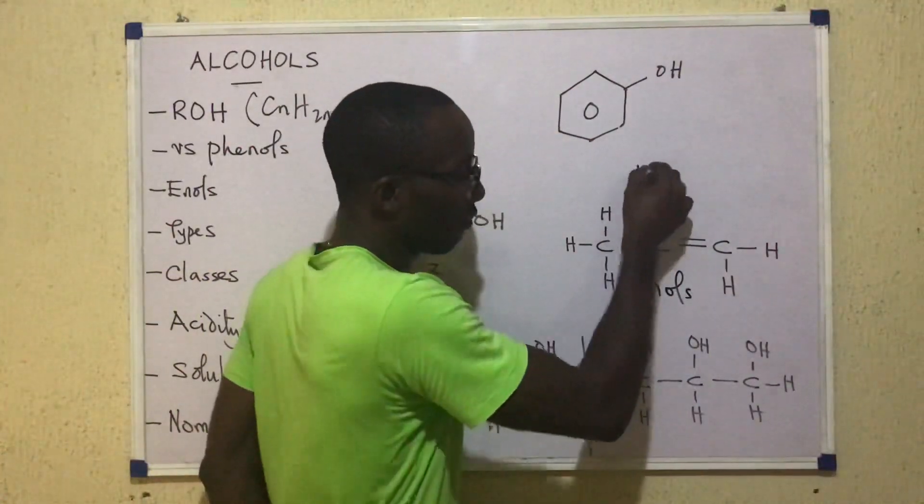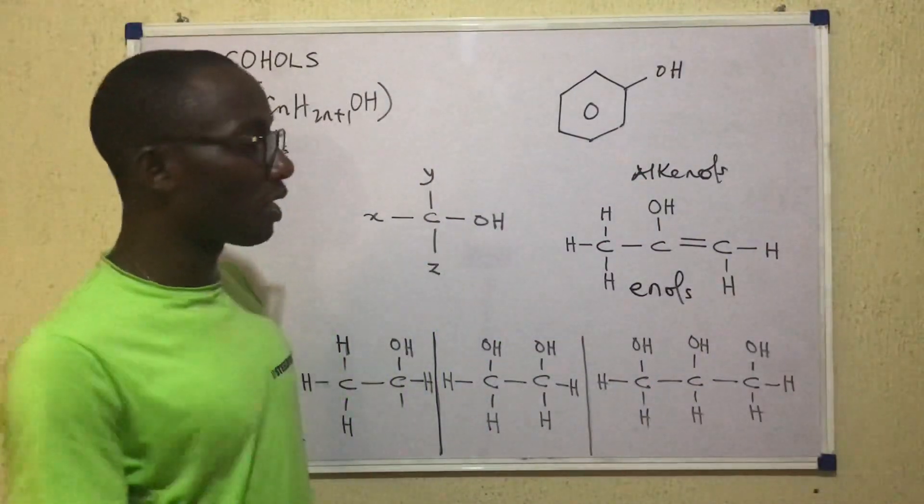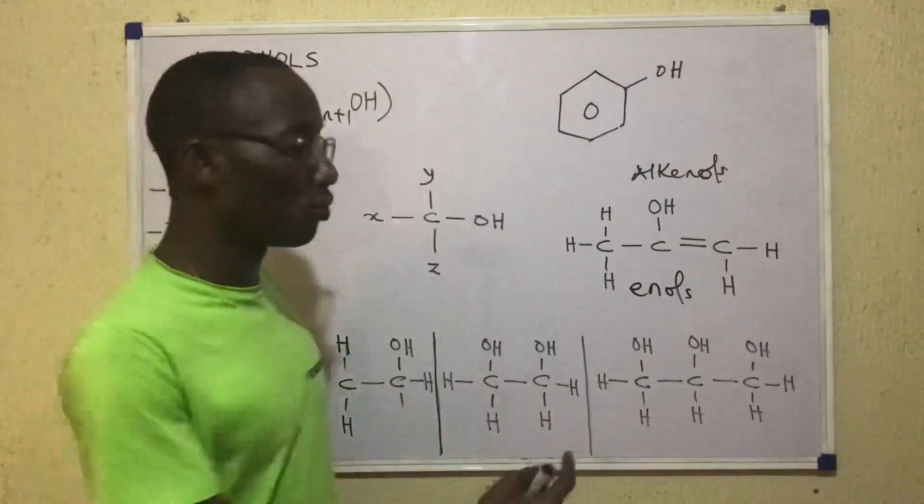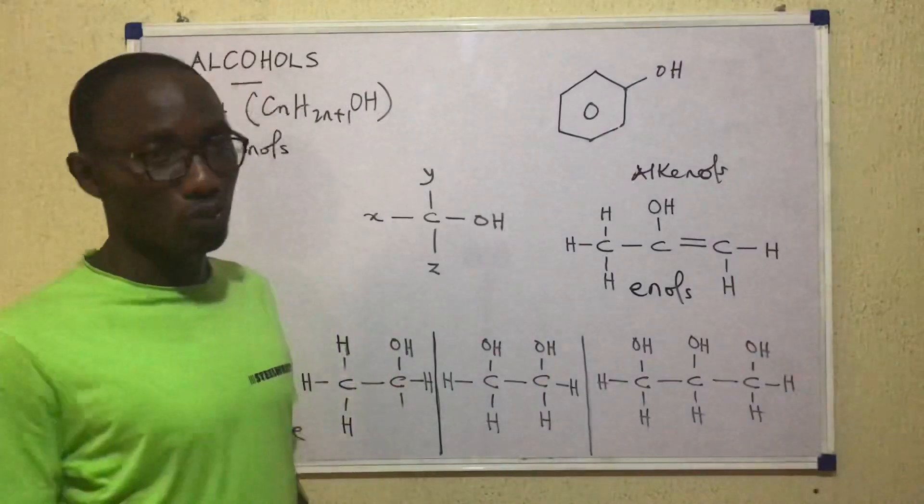Some persons call them the full name alkenols. So alkenols or enols are compounds that have the OH attached to one of the two carbons that have the double bond between them.